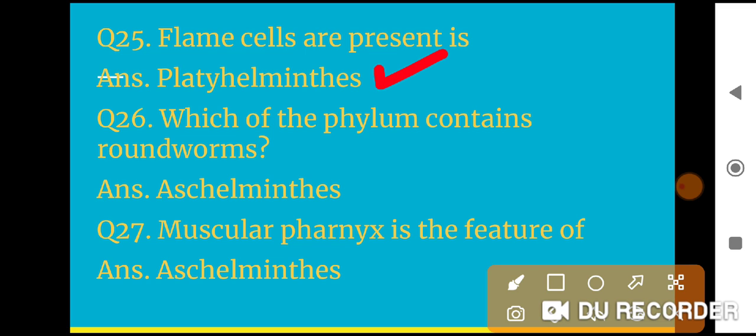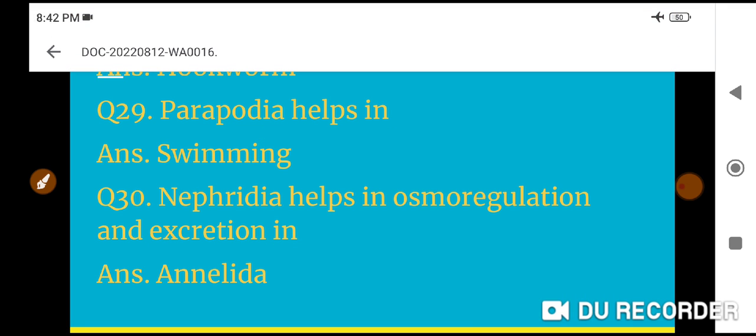Question 25: Which of the following are called flatworms? Platyhelminthes. Question 26: Flame cells are present in Platyhelminthes. Question 27: Which phylum contains roundworms? Aschelminthes. Question 28: Muscular pharynx is the feature of Aschelminthes.